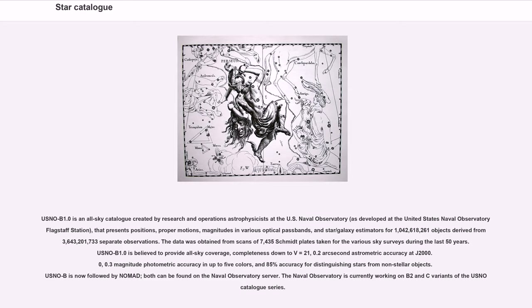USNO B1.0 is an all-sky catalog created by research and operations astrophysicists at the U.S. Naval Observatory, developed at the United States Naval Observatory Flagstaff Station, that presents positions, proper motions, magnitudes in various optical passbands, and star/galaxy estimators for 1,042,618,261 objects derived from 3,643,201,733 separate observations. The data was obtained from scans of 7,435 Schmidt plates taken for the various sky surveys during the last 50 years. USNO B1.0 is believed to provide all-sky coverage, completeness down to V=21, 0.2 arc-second astrometric accuracy at J2000.0, 0.3-magnitude photometric accuracy in up to five colors, and 85% accuracy for distinguishing stars from non-stellar objects. USNO B is now followed by NOMAD; both can be found on the Naval Observatory server.